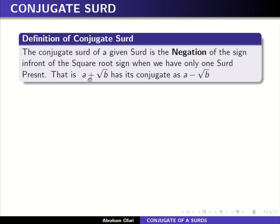So if you have a plus the square root of b, you negate this and it becomes negative. You can also think of it as changing the sign in front of the square root sign — I change the sign here to negative. This definition applies when you have only one square root present, only one surd.